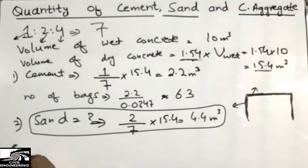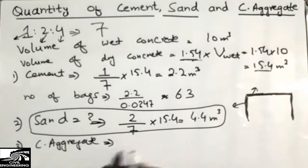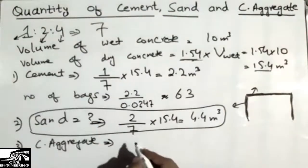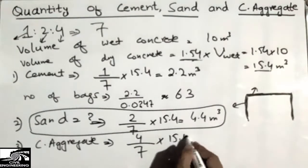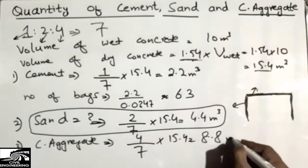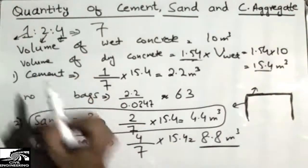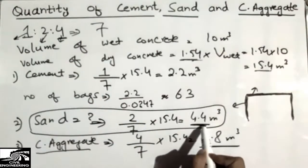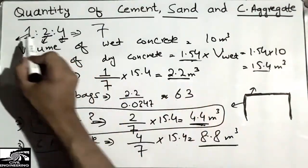To find the coarse aggregate volume, we divide the coarse aggregate ratio of 4 by the total ratio of 7, then multiply by the dry volume: (4/7) × 15.4 = 8.8 cubic meters. Coarse aggregate is the largest quantity because its ratio is the highest — 4.4 corresponds to ratio 2 (sand) and 2.2 corresponds to ratio 1 (cement).